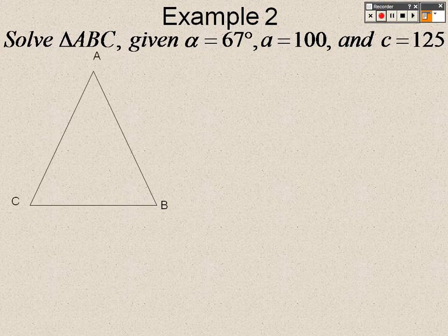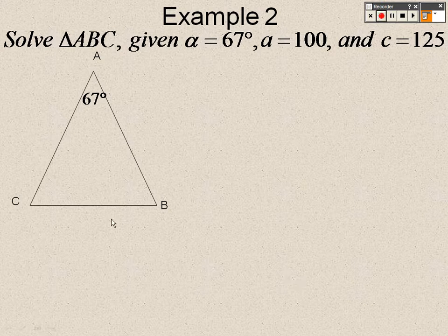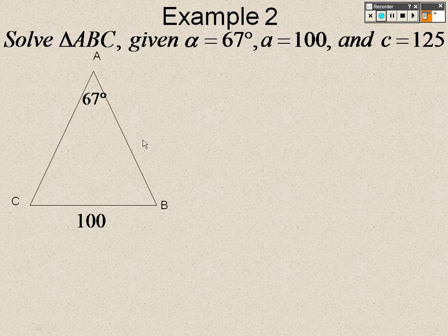Given that alpha is 67 degrees, side A, which would be down here, is 100. Side C, which, if that's angle C, this is C right here. Here, we'd have 125.